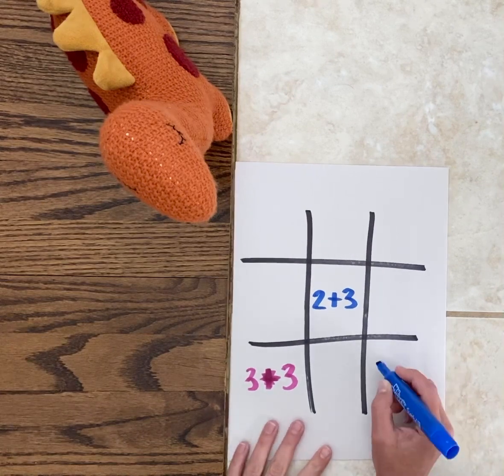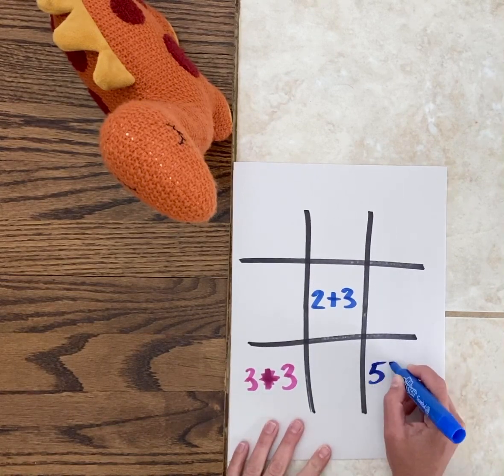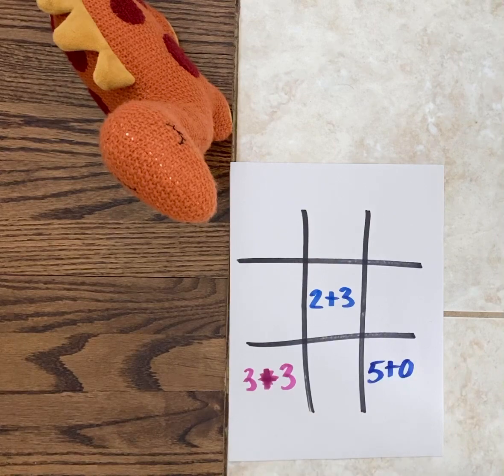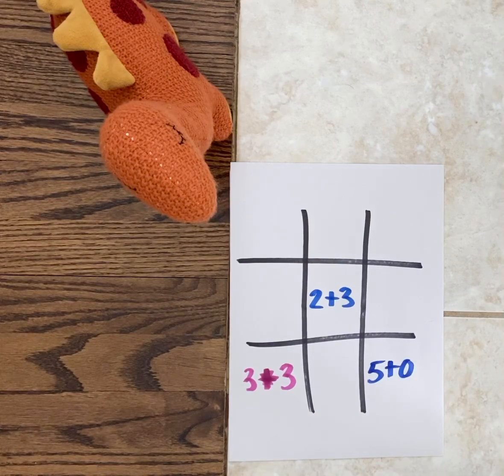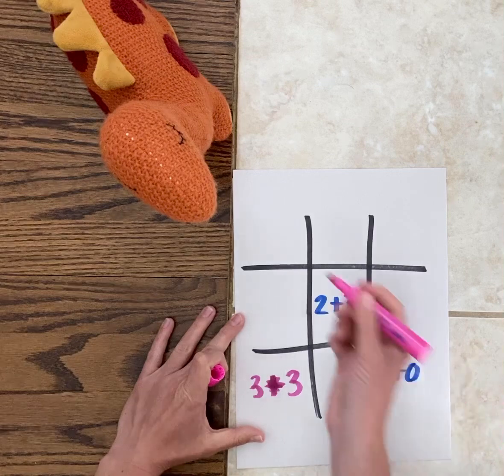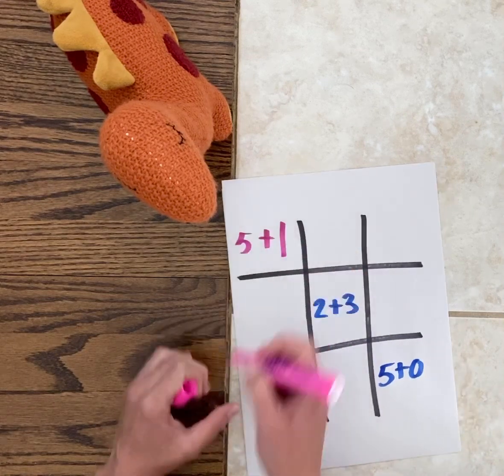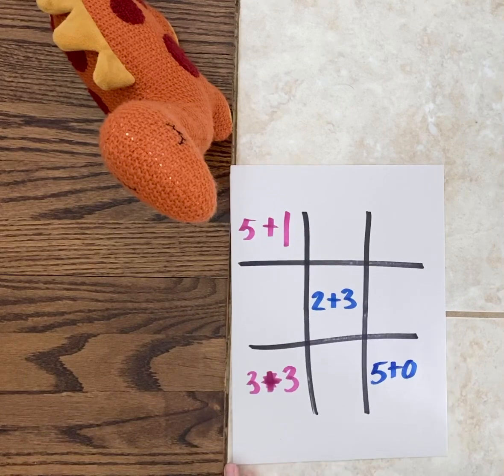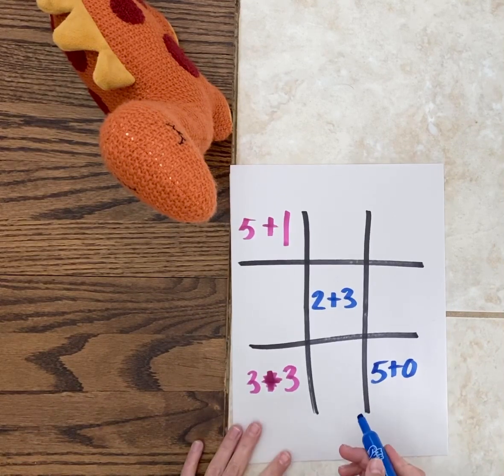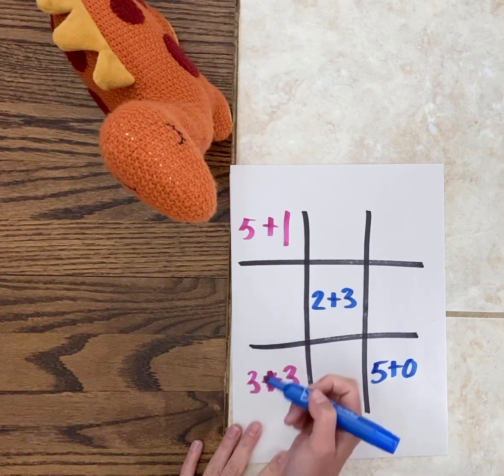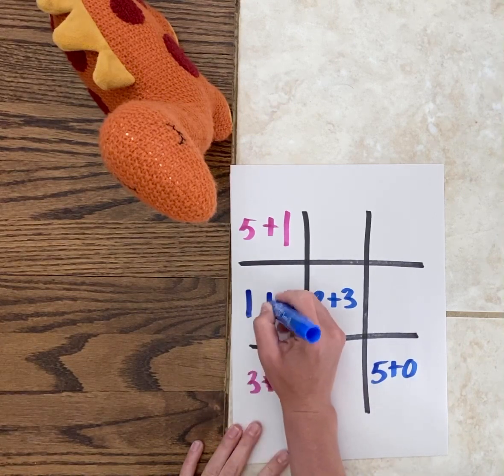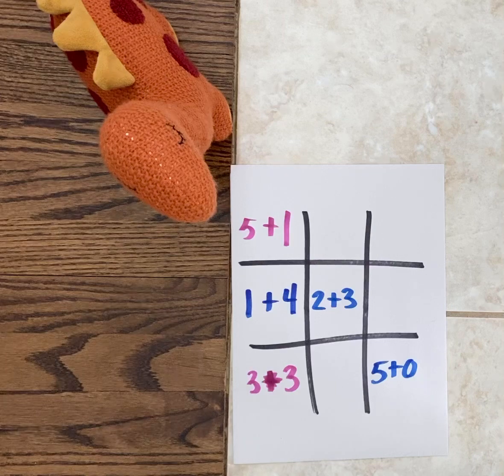So I'm going to go down here to block dino. I'm going to do five plus zero, that also equals five. Okay, dinosaur might try to block me and go up here. Five plus one equals six so they could go there. I'm gonna go right here to block dinosaur, so I'm gonna do one plus four, that also equals five.